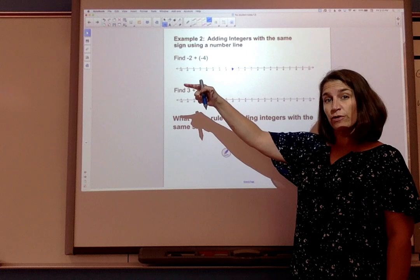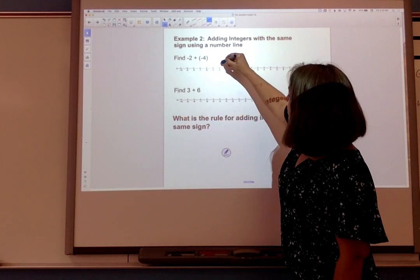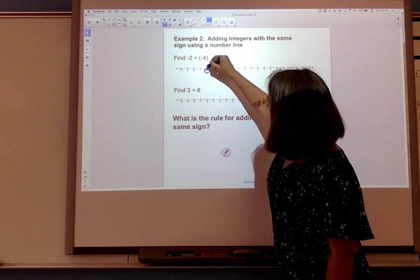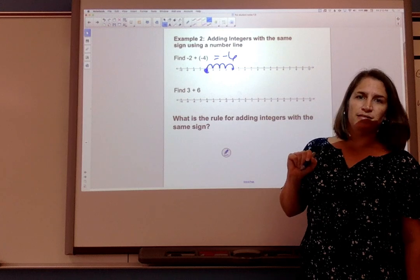That means we're going further in the negative direction, further to the left of zero. So I'm gonna go 1, 2, 3, 4 and I'm gonna end right here which is -6.